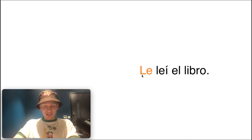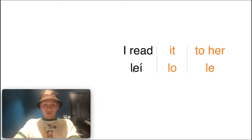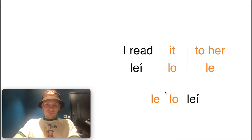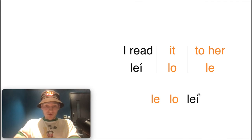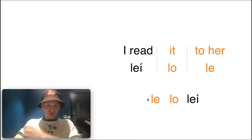Now it's getting interesting: 'I read it to her' — combining both pronouns. Leí we know. 'It' is lo because it relates to el libro, which is masculine. 'To her' is le. So you'd think: le lo leí. Remember they always come before the verb conjugation. There's also another rule: the indirect object pronoun always comes before the direct object pronoun when both are used in the same sentence.